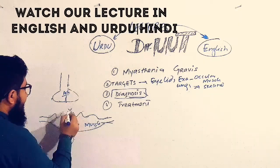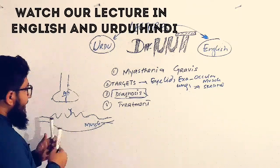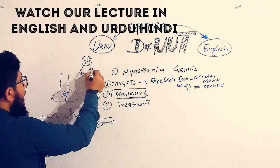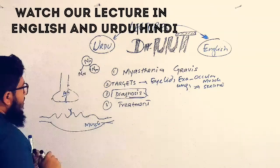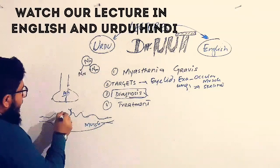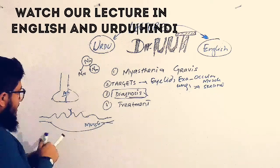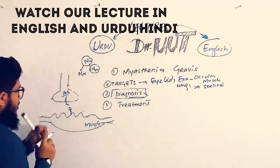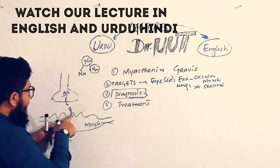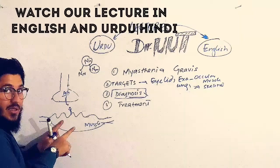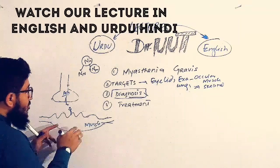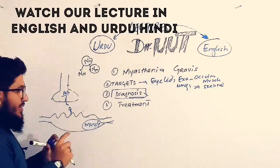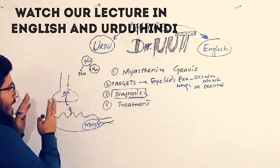When acetylcholine binds to the receptor present at the muscle — these are called nicotinic receptors. We have two types: nicotinic neuronal and nicotinic muscle type. When the nicotinic muscle type receptors are activated by acetylcholine, this neurotransmitter binding to the receptor causes the receptor to become activated, which leads to muscle contraction.